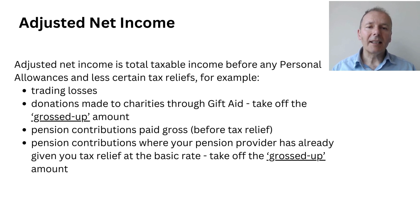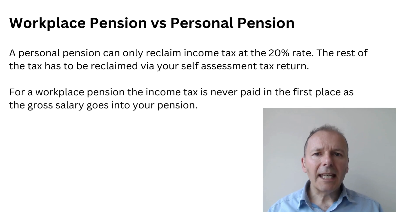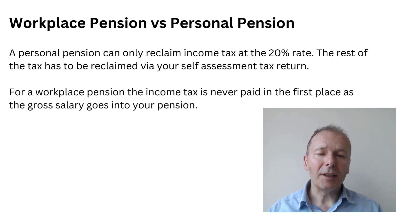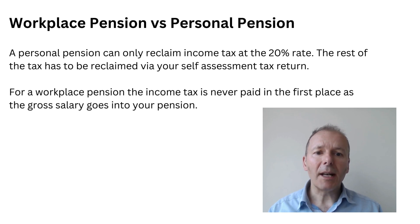Adjusted net income is basically your income less any trading losses if you're self-employed, donations made through Gift Aid, or pension contributions. A key way to reduce your income tax bill is to make additional pension contributions, either into your workplace pension or a personal pension. However, with a personal pension you can only reclaim income tax at the 20% rate automatically.